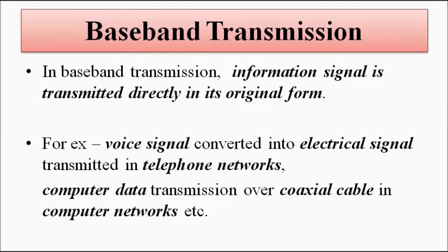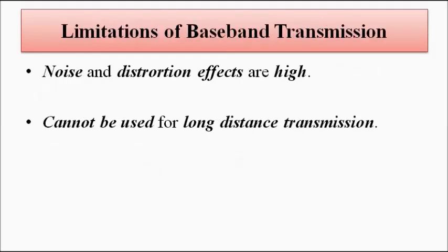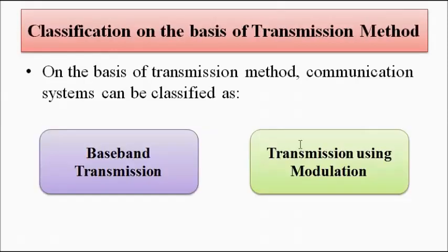This baseband transmission method, however, has certain limitations. The main limitation is that noise and distortion effects are very high. Even if we ignore this, it is practically impossible to transmit signals over long distances because cabling or wiring over long distances is not possible — physical connection between two points is very difficult to achieve. To overcome these limitations, the second method, transmission using modulation, is used.